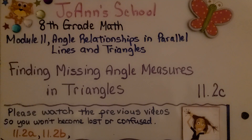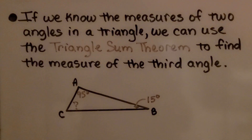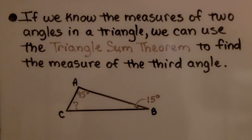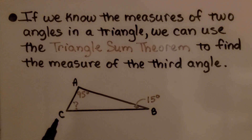Finding Missing Angle Measures in Triangles, lesson 11.2c. If we know the measures of two angles in a triangle, we can use the Triangle Sum Theorem to find the measure of the third angle. It's kind of common sense. We've learned that the interior angle measures of a triangle sum to 180 degrees.